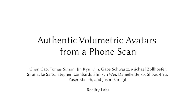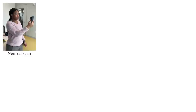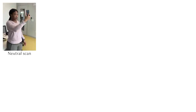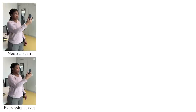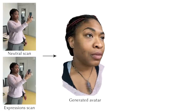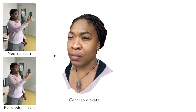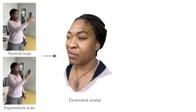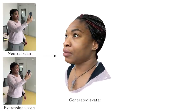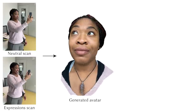We present authentic volumetric avatars from a phone scan. To create an avatar, a user can use an RGBD camera, such as an iPhone 12, to capture a neutral expression from different viewpoints, as well as a set of facial expressions. We use this data to generate the user's photorealistic avatar, which matches the user's face in terms of geometry and appearance, and can produce high-fidelity renderings from novel viewpoints and expressions.